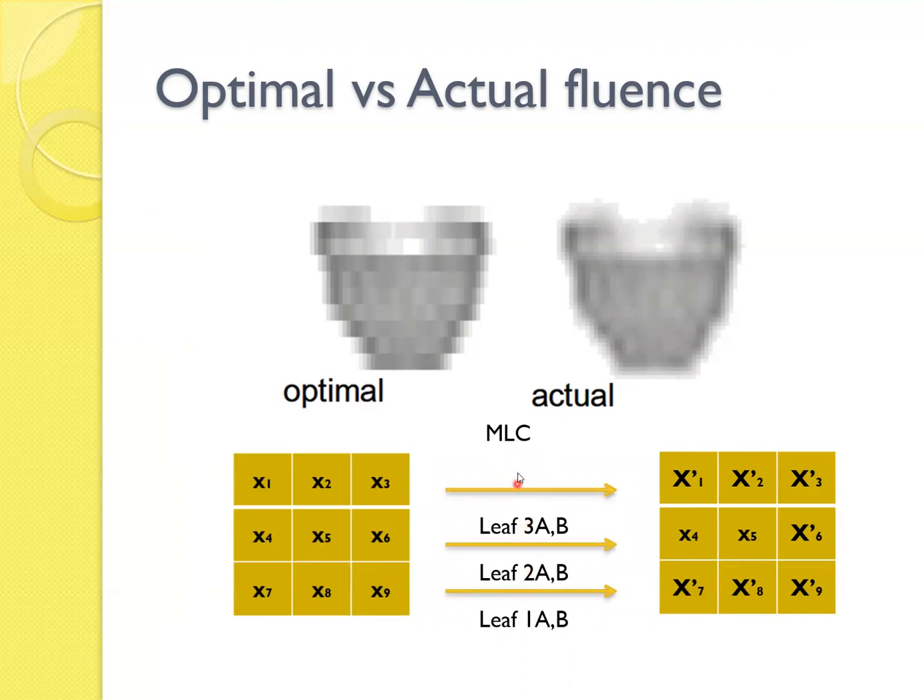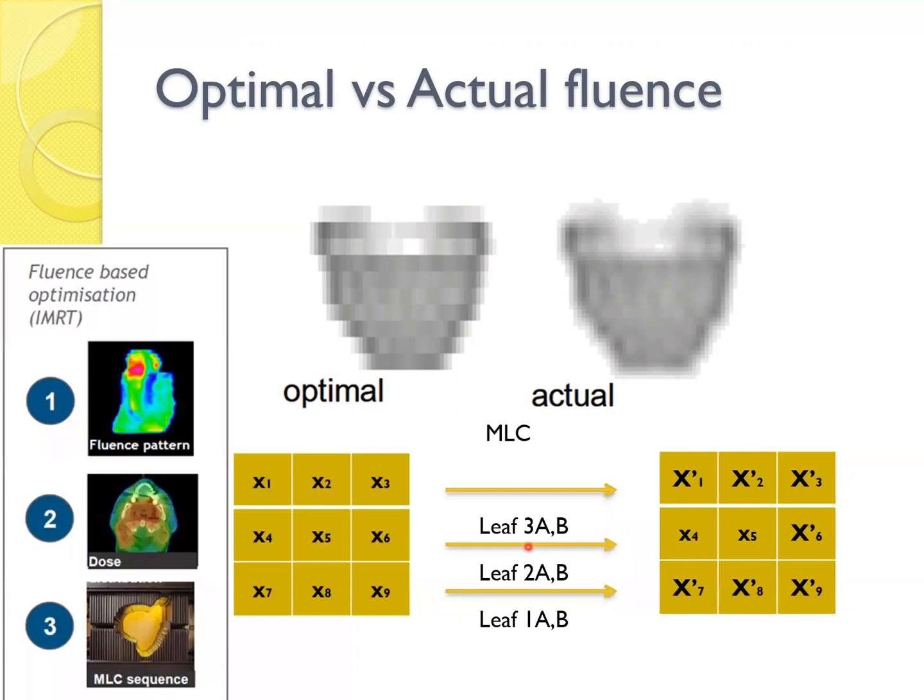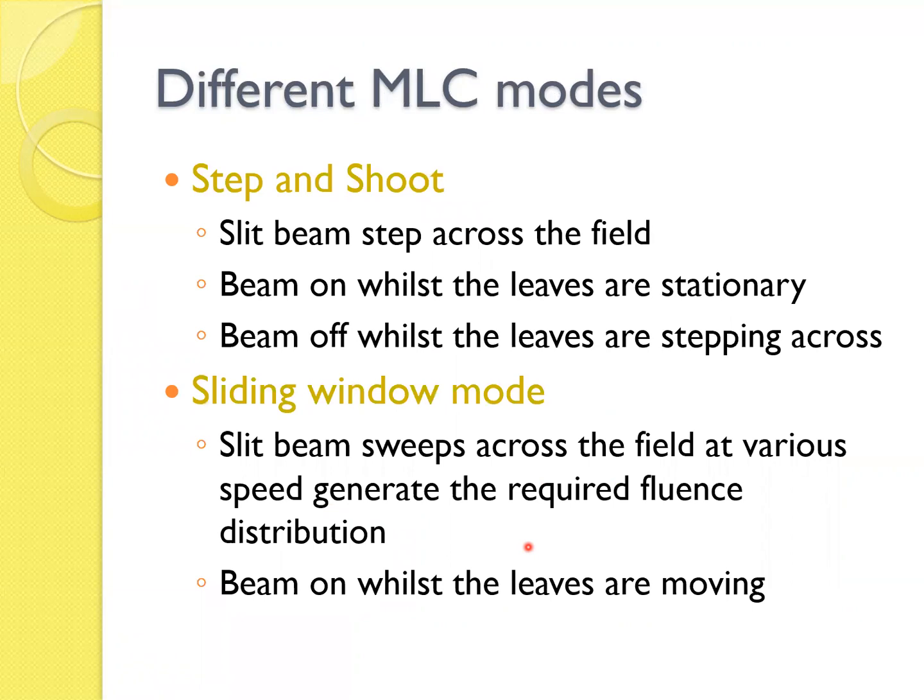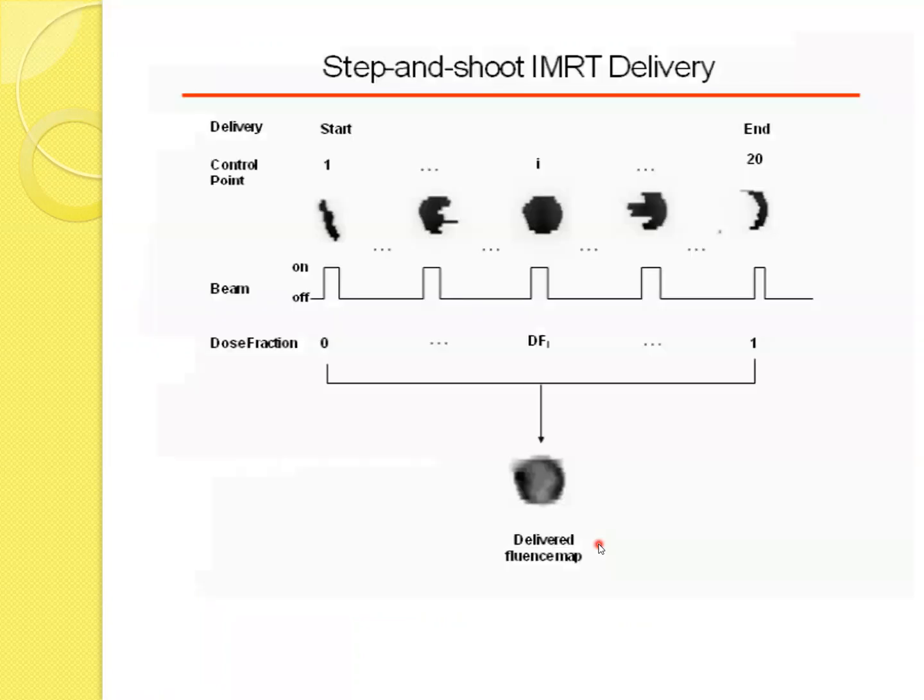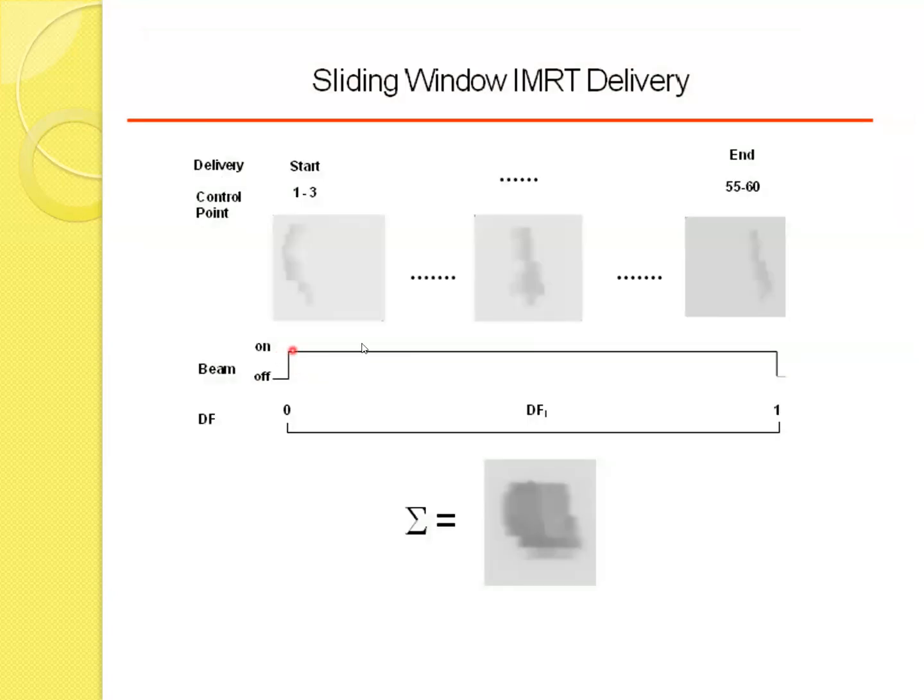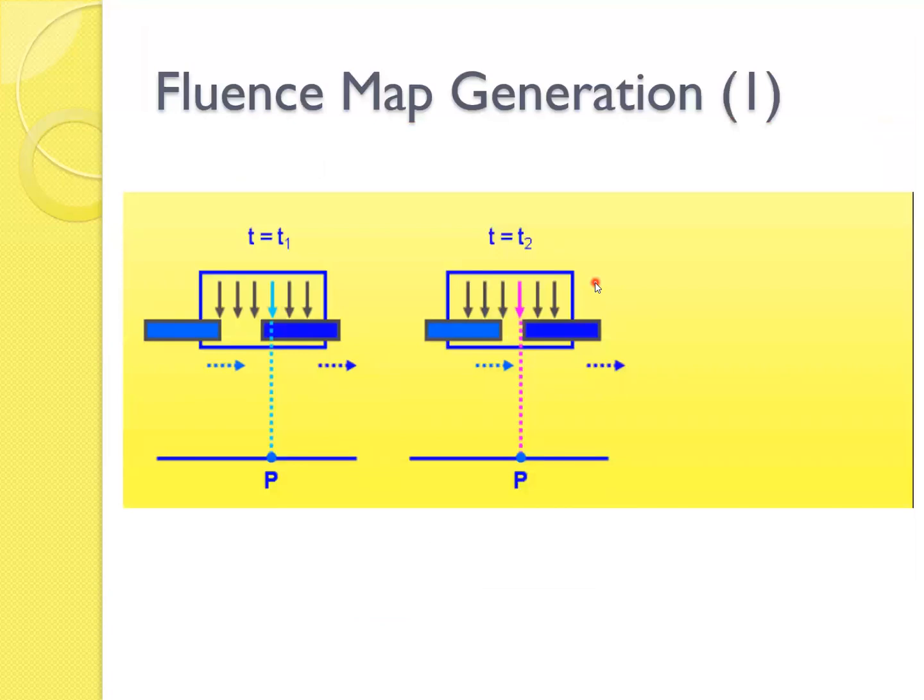And this is how it works like using the MLC. The different MLC modes. Step-and-shoot: stepped beam steps across the field. Beam on, the Varian's leaves are stationary. Beam off, the leaves are stepping across the sliding window. Sliding beam swept across the field at various speeds, generate the required fluid situation. Beam on, the leaves are moving. So this is step-and-shoot. Try to achieve different segments and beam on and beam off conditions. Whereas in sliding window, it's always on but MLCs are also moving. So it gives you similar results.